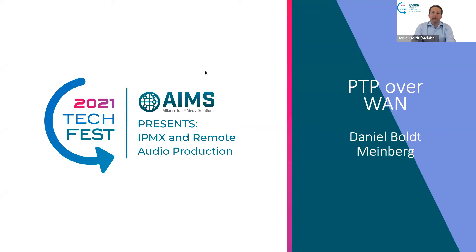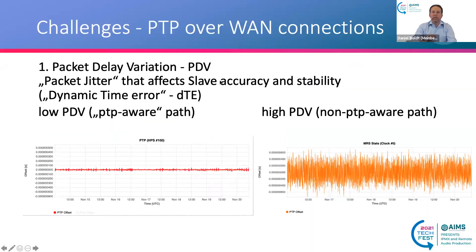Let's have a look at the challenges of PTP over WAN and the ways to solve them. The first one, as Nicolas already mentioned, is the packet delay variation, the so-called PDV — the packet jitter that directly affects the accuracy of the slave and the stability.